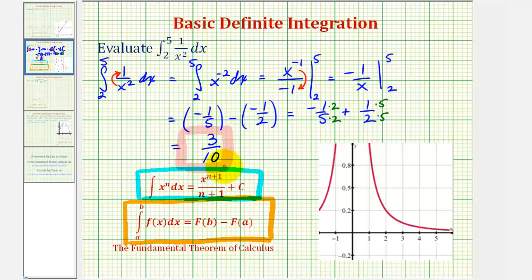Now I also provided the graph of our integrand f of x equals one divided by x squared, because notice on the interval from two to five, or from here to here, the function is non-negative, which means the area below the function and above the x-axis would be equal to the given definite integral, which is three-tenths. Which means the area of the shaded region would be three-tenths of a square unit.